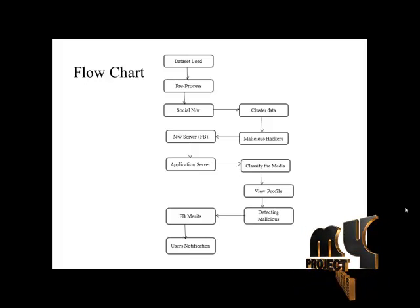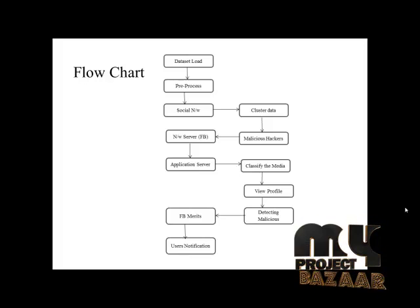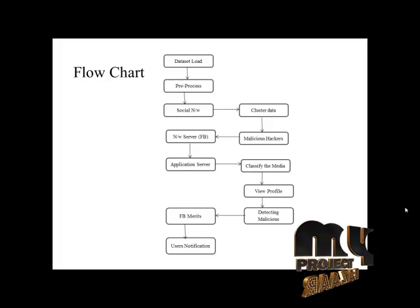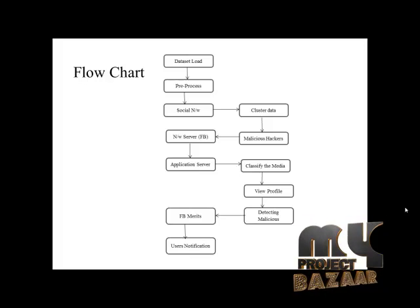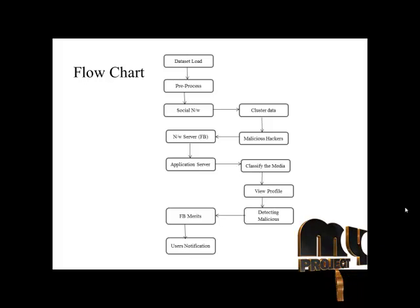Next we move to social networks. Nowadays all people are using social networks, which are growing day by day for multi-users — for example Facebook, Twitter, and WhatsApp. These are some third-party applications. Third-party applications make it easy for hackers to share malicious information over social media. Next we cluster the data. Clustering specifies our data. The hacker's goal is to lose or corrupt data, injecting spam or viruses to attack the whole dataset.